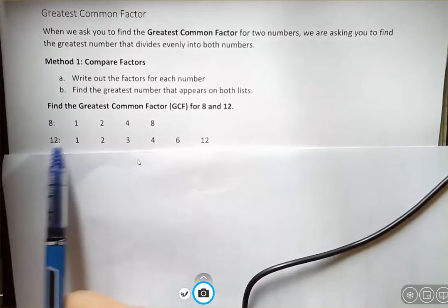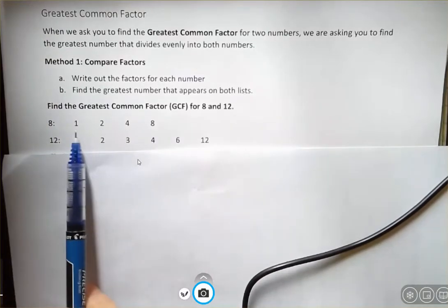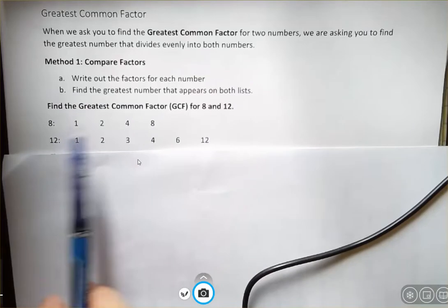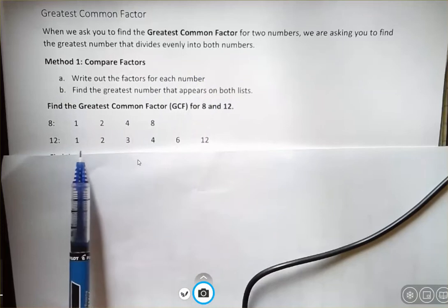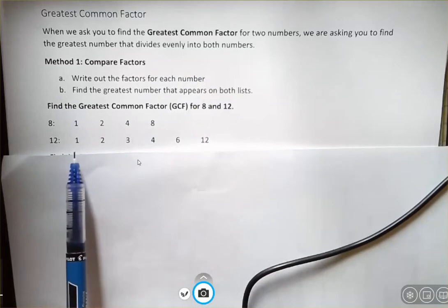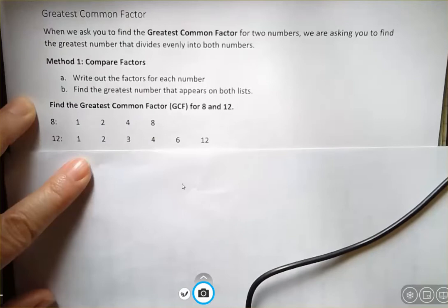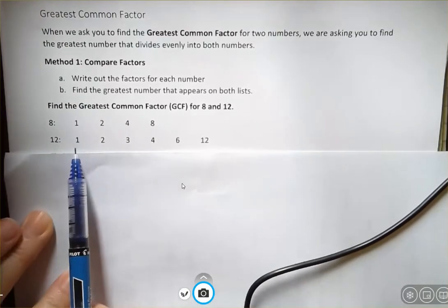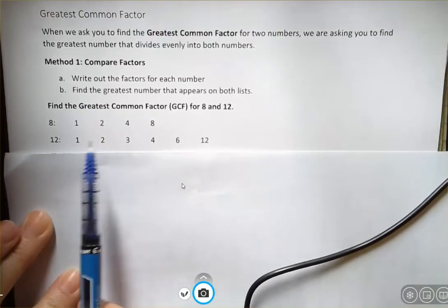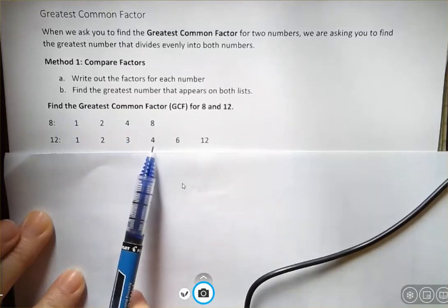I would list out all the factors of eight. Now notice the factors are all the numbers that divide evenly into eight. So that's what we're talking about here, a number that divides evenly into both numbers. And then I list out all the factors of 12, which I have listed here. Now these have more than one factor in common. They both have one, one goes into everything. So everything's going to share a one. They both have a two, they both have a four, and that's where it stops.